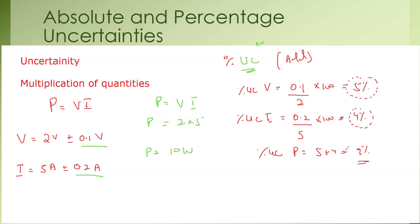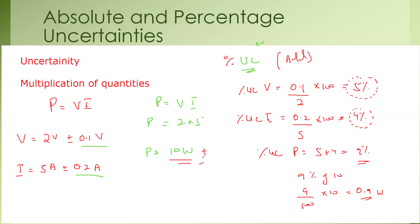The 9% is the total percentage uncertainty. But how do we work out the actual uncertainty in the power? The total power is 10 watts. So 9% of 10 is 9 divided by 100 multiplied by 10, which gives 0.9. So the total uncertainty in the power equals ±0.9 watts.